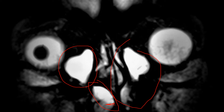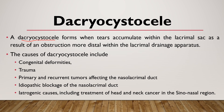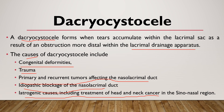This condition is known as dacryocystocele. If it becomes secondarily infected, it is called dacryocystitis. Sometimes it ruptures spontaneously. Dacryocystoceles are caused by obstruction of both the proximal and distal ends of the nasolacrimal duct. An imperforate Hasner valve causes the distal blockage, while the cause of proximal obstruction is less clearly understood, but Rosenmuller valve obstruction has been suggested. A dacryocystocele forms when tears accumulate within the lacrimal sac due to an obstruction more distal within the lacrimal drainage apparatus. Causes include congenital deformities, trauma, primary and recurrent tumors affecting the nasolacrimal duct, idiopathic blockage, and iatrogenic causes including treatment of head and neck cancer in the sinonasal region.